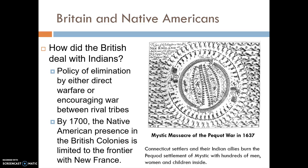To give you an example, we can look at the Mystic Massacre of the Pequot War of 1637. The picture you see is an engraving from the time. The Pequot were a Native American tribe and Mystic was their village with a couple hundred men, women, and children. Colonists from Connecticut surrounded it with their Native American allies on the outside, set fire to the village, and killed those who tried to escape. This gives you an idea of what warfare was like between the British settlers and the Native Americans.